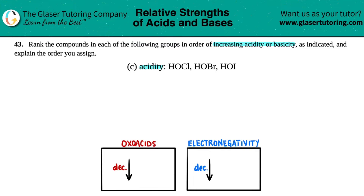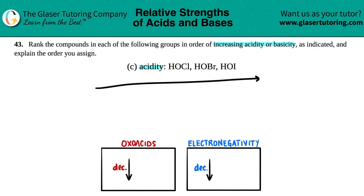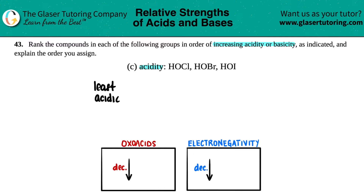First, I'm going to list my ranks. We need to go from increasing acidity, so my least acidic compound would be on the left side and my most acidic would be on the right side.